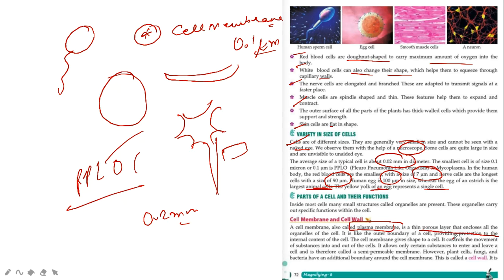And it is a thin porous layer that encloses all the organelles of the cell. It is like the outer boundary of the cell providing protection to the internal content of the cell. Suppose this is the outer, this is plasma membrane or cell membrane. What is it doing? It protects all the substances inside the cell.